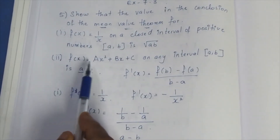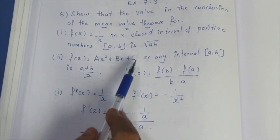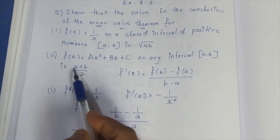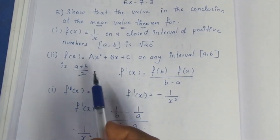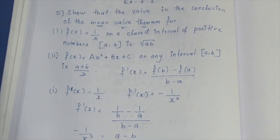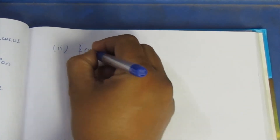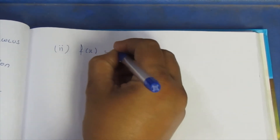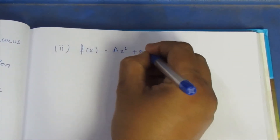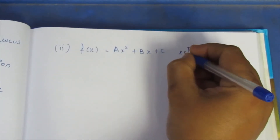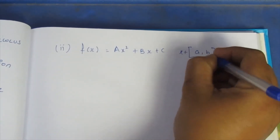Now the second sum: verify that for f(x) = ax² + bx + c on the closed interval [a, b], the value given by the Mean Value Theorem is x = (a + b)/2. We need to prove that c equals (a + b)/2.